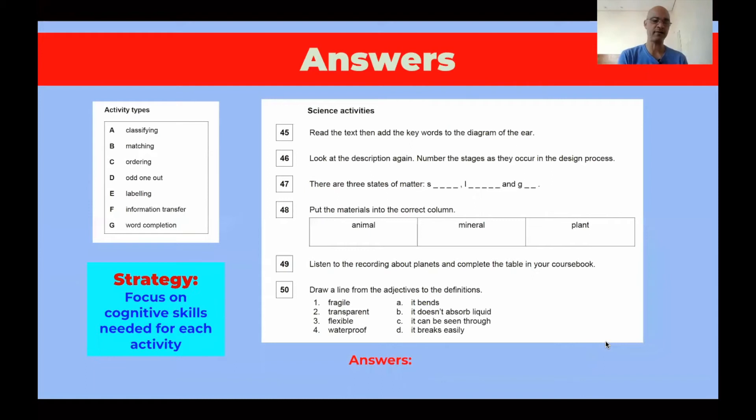So first of all, classifying information, we know. You have different words and you have a table, you have to put the word inside the box, the corresponding box in the table. Matching, that's exactly what we're doing here in this exercise. We're matching numbers to letters. Ordering is to put things in a sequence. Odd one out is to eliminate the one that doesn't fit the group. Labeling is to put names to things. Information transfer involves getting something from a medium and putting it in another medium. So read something and then record it or listen to something and then write it. So you are transferring information from one medium to the other. Word completion, you have a sentence, there's a blank and you have to put in a word that's missing. Or sometimes you have a letter of the word and you have to complete the rest of the word.